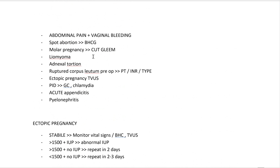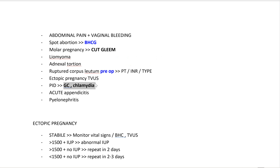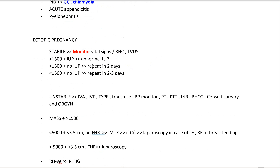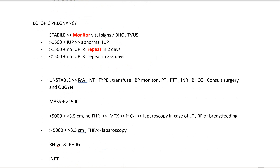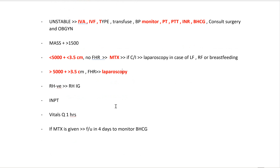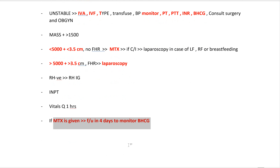In summary: for a patient with abdominal pain and vaginal bleeding, order beta HCG, CBC, pre-op labs, and chlamydia and gonorrhea testing. If stable, monitor or repeat beta HCG. If unstable, give IV fluids and pre-op labs. If beta HCG less than 5000 and mass less than 3.5 cm, give methotrexate. If more than 5000 or more than 3.5 cm, do laparoscopy. If methotrexate is given, monitor beta HCG in four days.